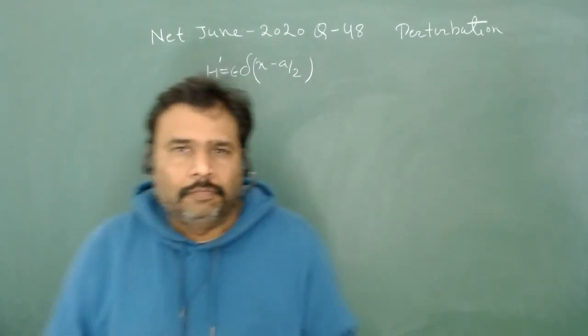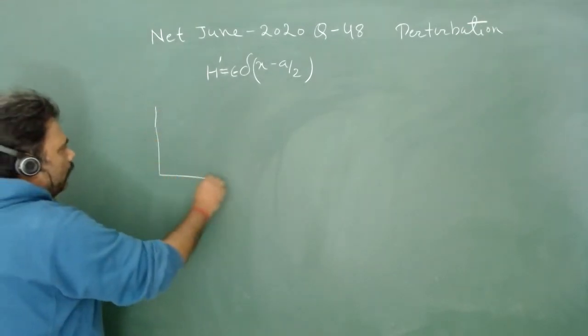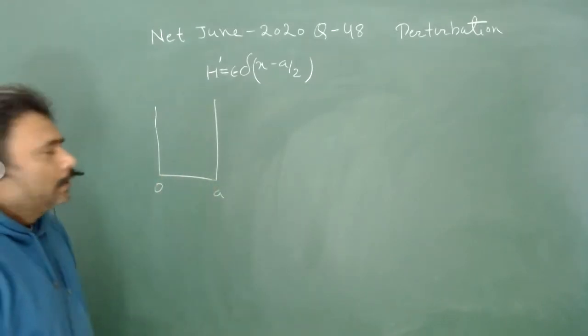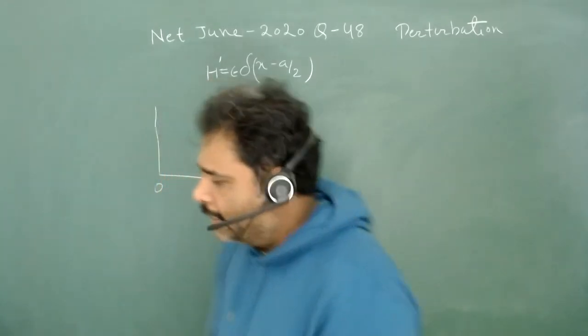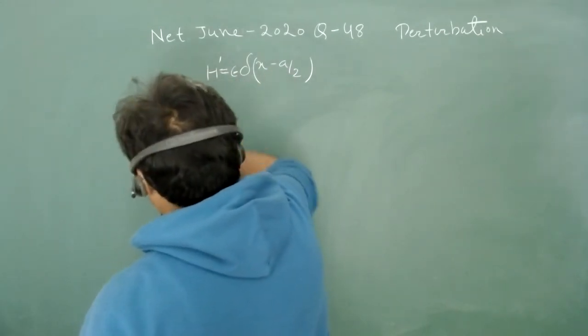So let's see what this particular problem is. This is a one-dimensional box. We have zero to a, that is given in the problem, and there is a perturbation.